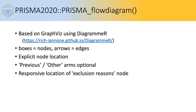It also has what's called responsive location of the exclusion reasons node. So the box that has exclusion reasons in it — where each line is a different exclusion reason — can be varying sizes depending on the number of exclusion reasons. And the PRISMA flow diagram function responsively moves the boxes around depending on how big that box is, to a certain degree.